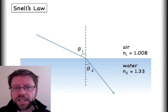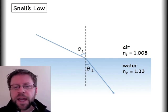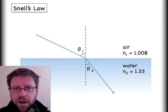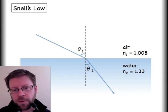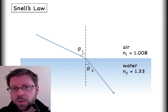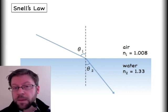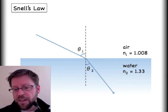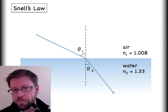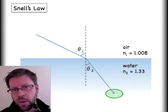Now let's put some mathematics behind this with Snell's Law. I'm filling in the actual indices of refraction: 1.008 for air and 1.33 for water. I'm showing theta-1 and theta-2 — always measured against the normal. That's just material 1 and material 2, which is fairly arbitrary. Right now I'm implying that the light is coming in through the air side and refracting into the water.